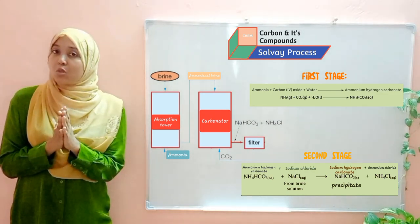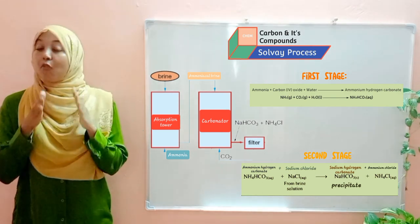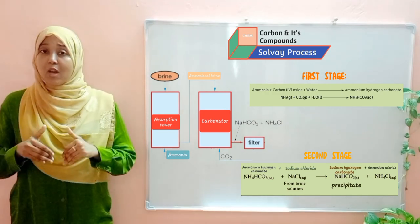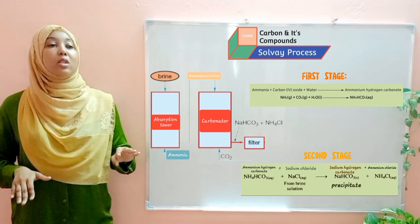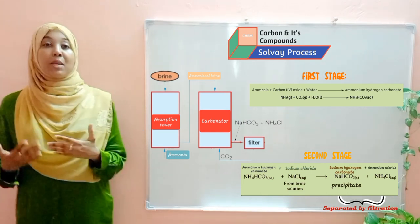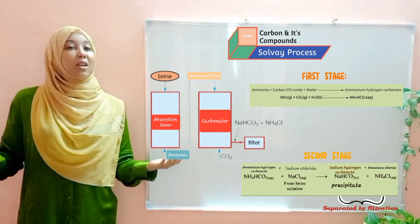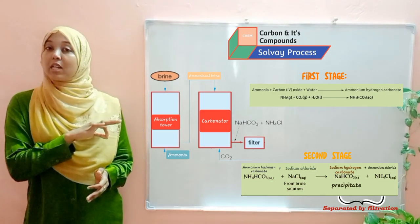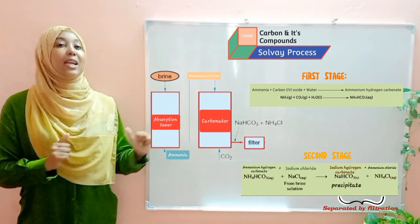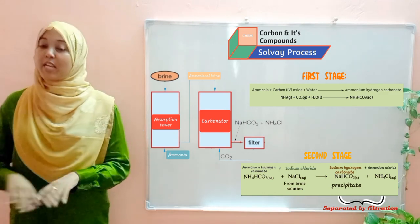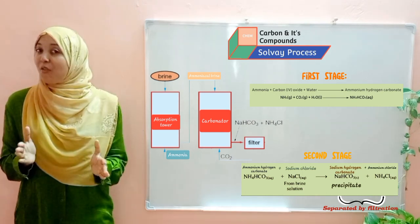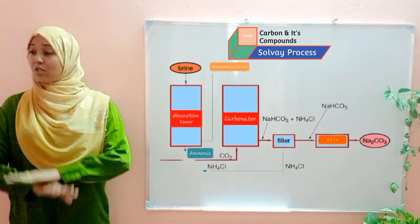Our main product needs to be sodium carbonate, which we'll obtain from the sodium hydrogen carbonate. But first, we need to separate the two salts — ammonium chloride and sodium hydrogen carbonate. The method used is filtration. Since sodium hydrogen carbonate is less soluble in the aqueous mixture, it is removed as the residue, while ammonium chloride is obtained as the filtrate.